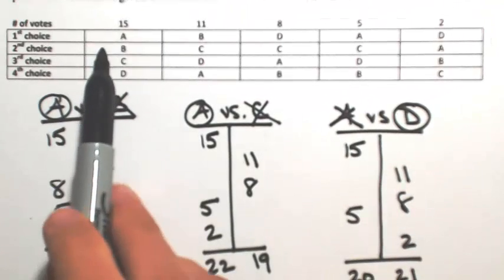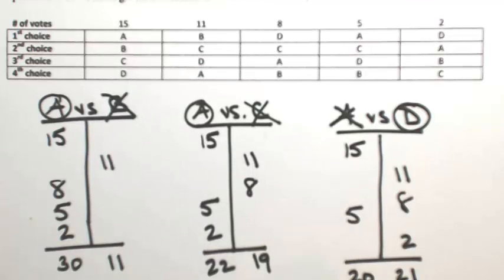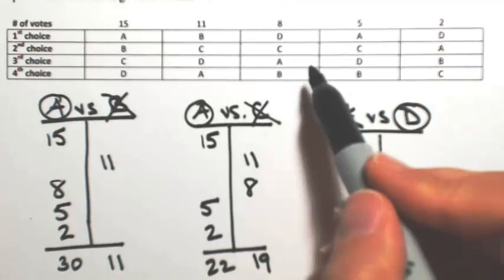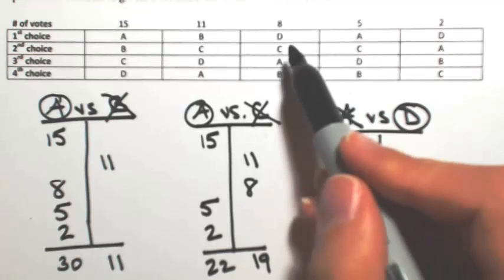Okay, so in the first column, B is over D, so B gets 15. In the second column, B is over D, so B gets 11. In the third one, D is over B, so D gets 8.